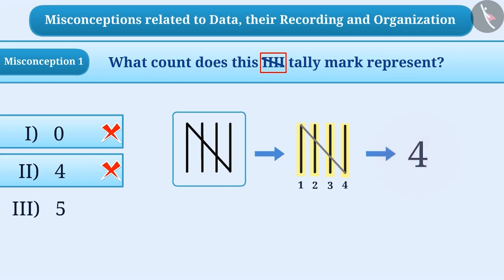Actually, the tally marks representing the number four have only four straight lines. That is, when the tally mark shows four straight lines, its count is four. If a slanted line is drawn on four lines, then the slanted line in the tally mark indicates fifth count. That is, this type of tally mark is counted as five, and the third option is the correct answer.